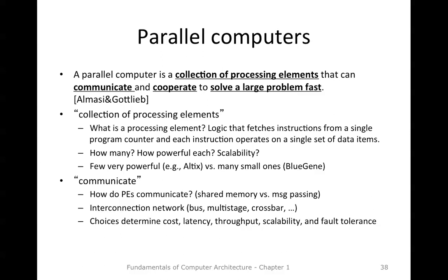When we think about processing elements and design parallel computers, there are many choices: how many processing elements do we want, and how powerful should each be? That determines scalability. For example, some systems choose to have few but very powerful cores, while others have many small processing elements, such as the IBM Blue Gene system.